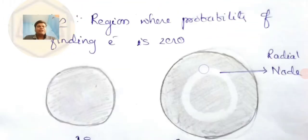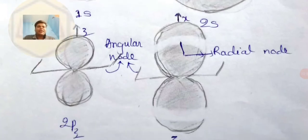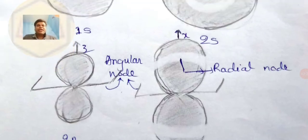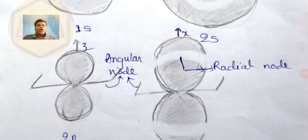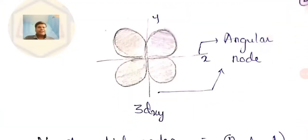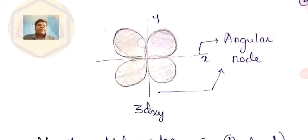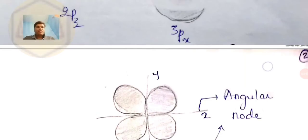For the 2p orbital — more precisely the 2pz orbital — solving the Schrödinger wave equation gives a dumbbell shape. That is how we say p orbitals are dumbbell shaped and s orbitals are spherical. Similarly, for d orbitals like the 3dxy orbital, solving the equation gives lobes oriented between the x and y axes.